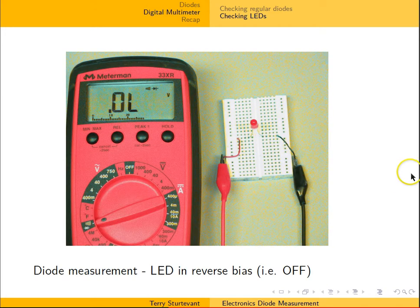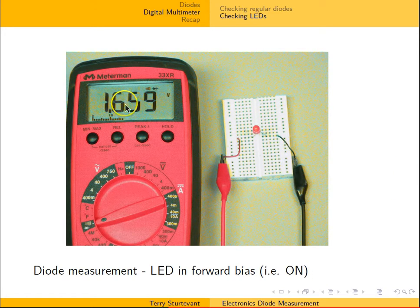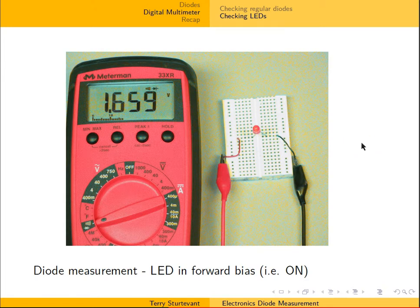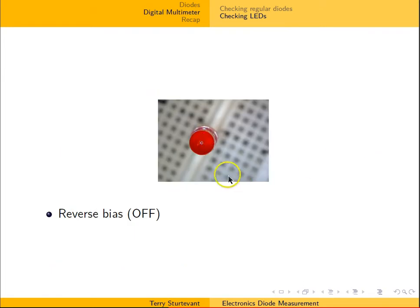Here we show a red LED in reverse bias — again we see open circuit. Now here, when it's in forward bias, you see the voltage is about 1.6 volts. If you remember, for the other diodes it was down around 0.5 or 0.6 volts. Looking a little closer: here it is in reverse bias, and in forward bias you can see that the LED is actually visibly on.